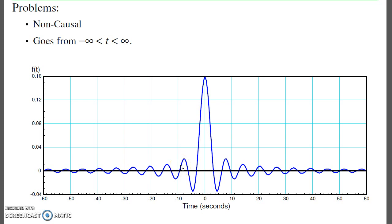So far, no one's built an ideal low-pass filter. We can't build non-causal filters. Second problem is this ringing goes from minus infinity to plus infinity. That makes it difficult to implement. But what I can do is do a couple approximations.